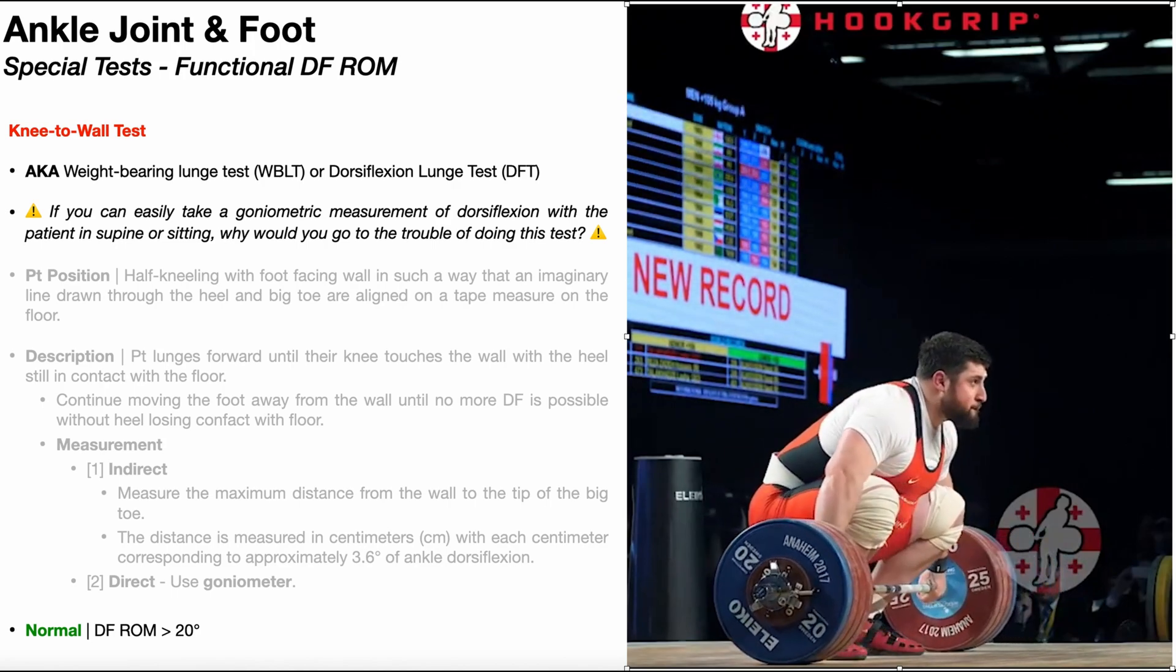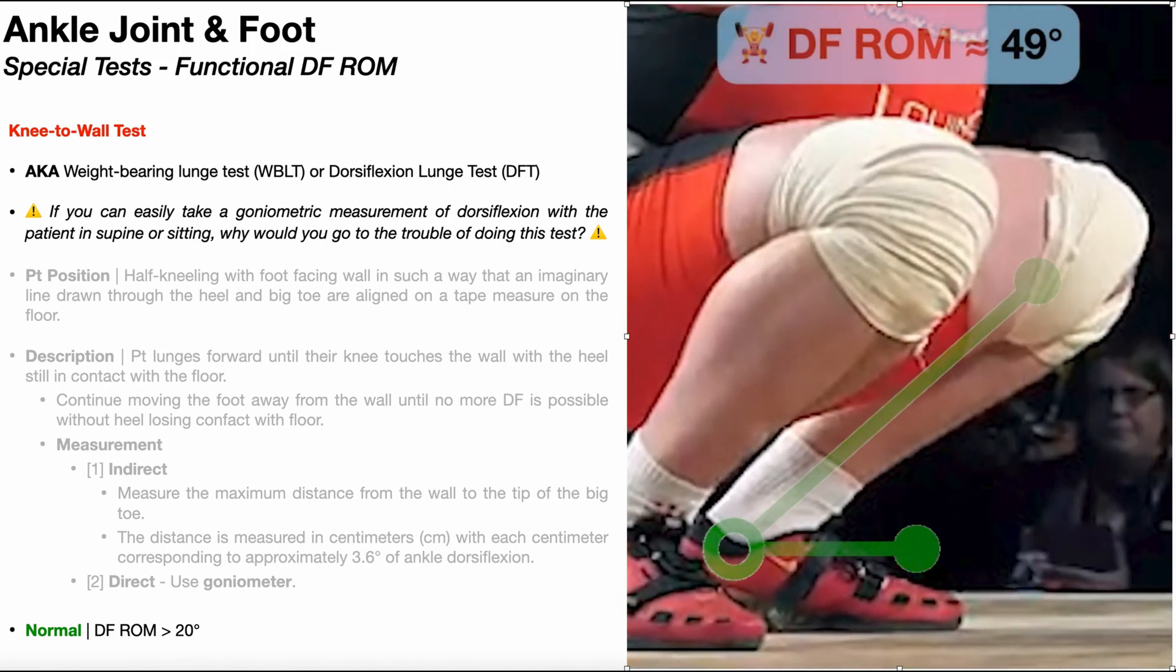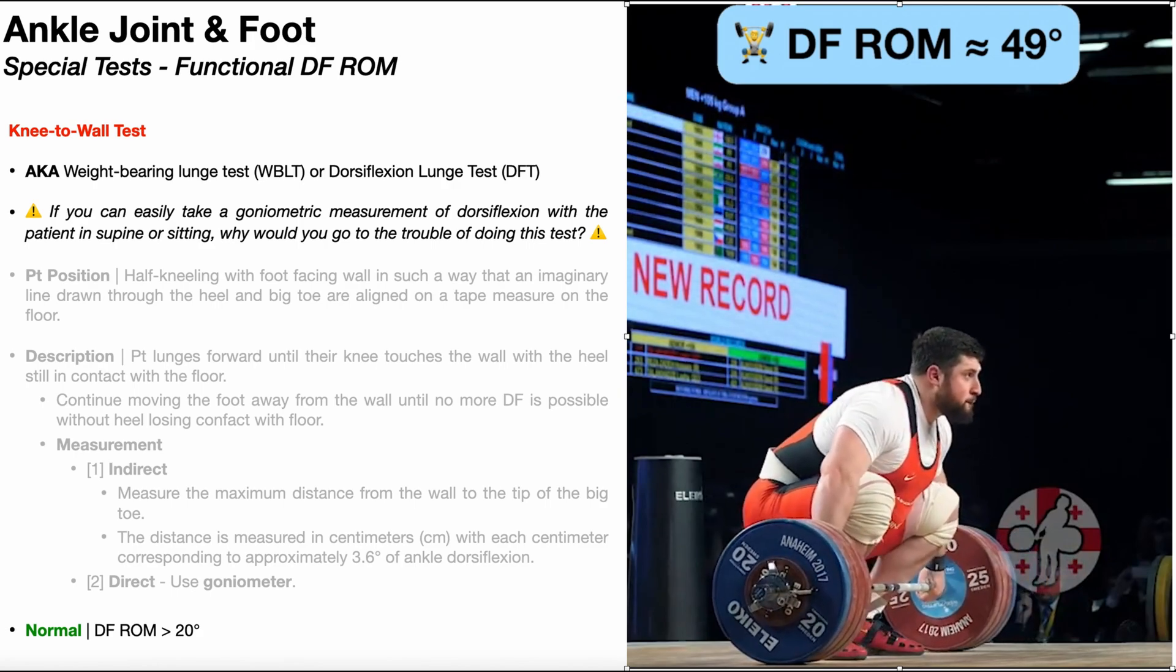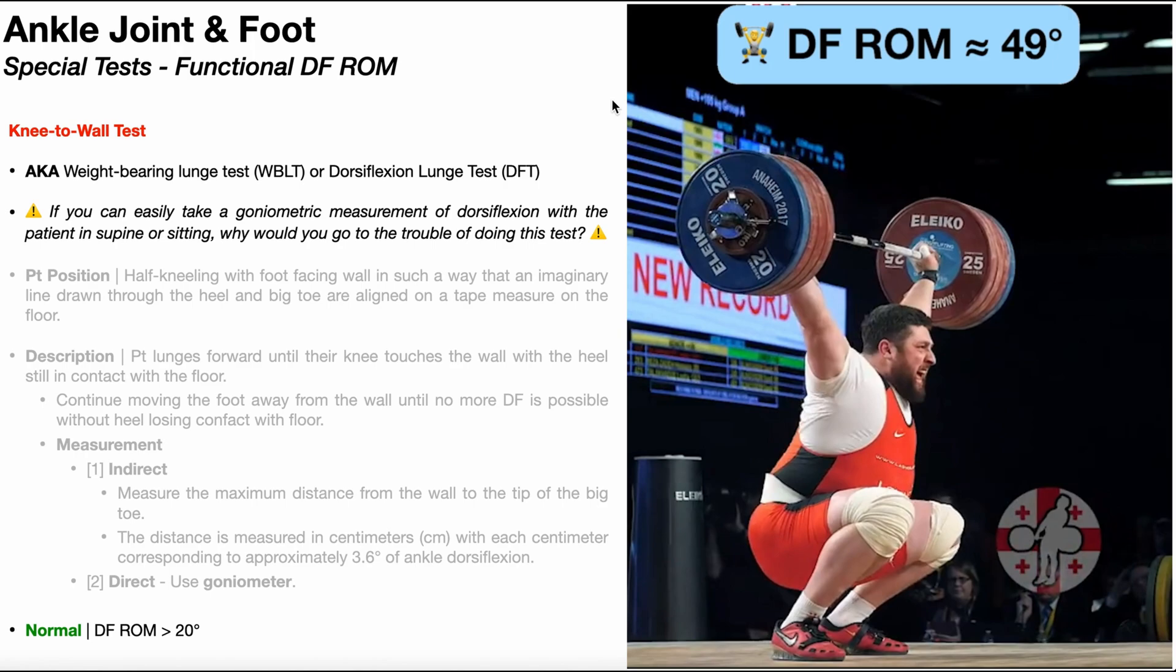Here's the guy who set the Olympic snatch world record. You can see right there, he's got about 49 degrees of dorsiflexion range of motion. Now with a snatch, the key is to be able to get as far as you can underneath the weight. So in general, with a snatch, the more you can descend, the better. And you're going to be able to descend more if you've got a greater closed chain dorsiflexion range of motion.